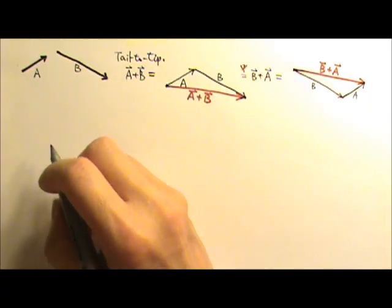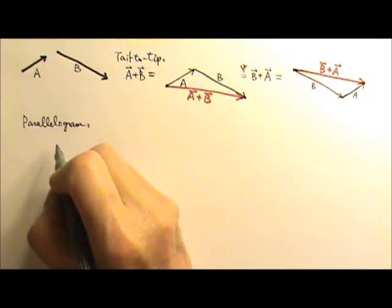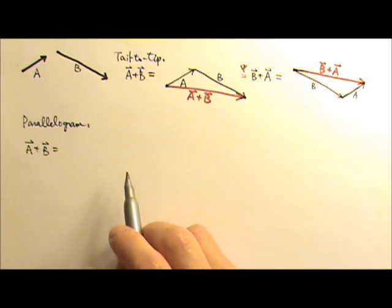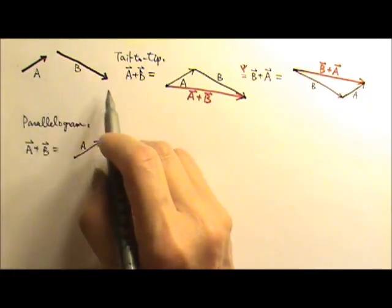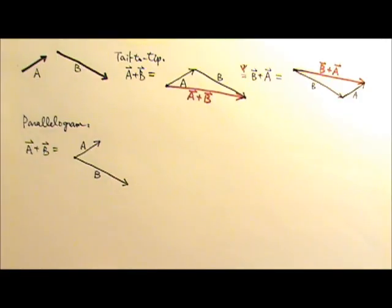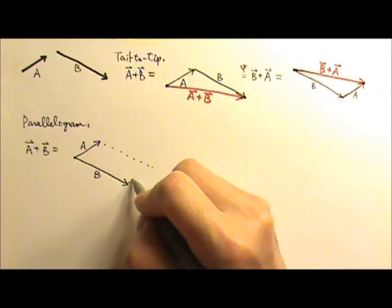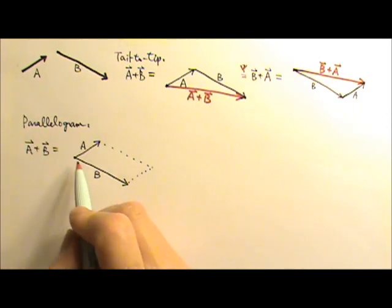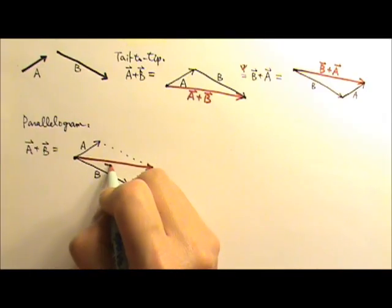The second method is called the parallelogram method. To add vectors A and B using this method, we copy the vectors but put their tails together. Then we use these two vectors to make a parallelogram. The diagonal of the parallelogram, starting from where the tails meet, is the sum — and that diagonal is A plus B.